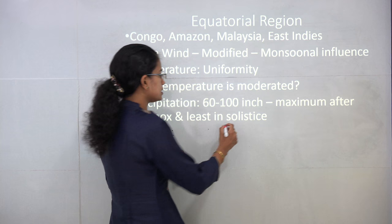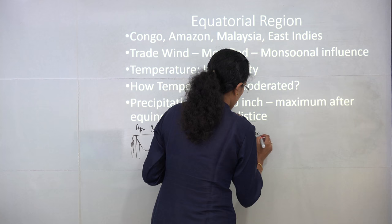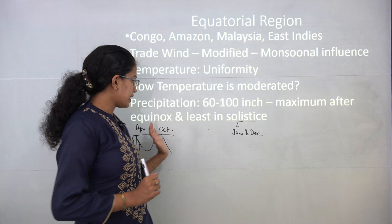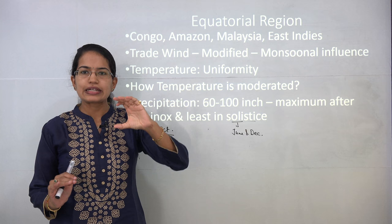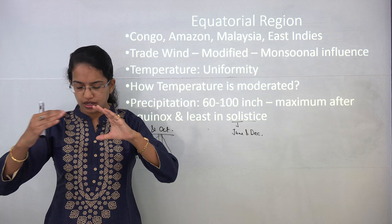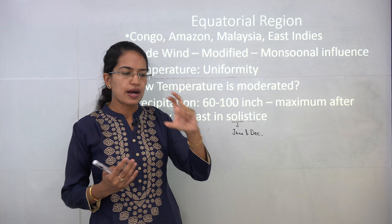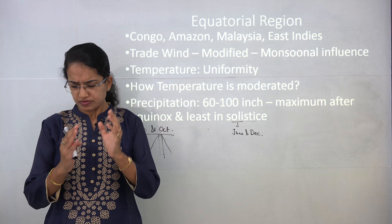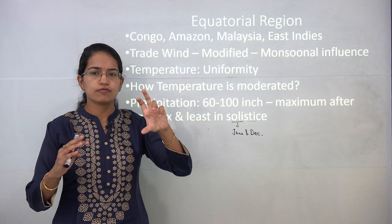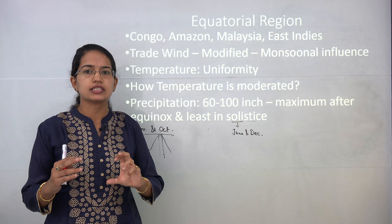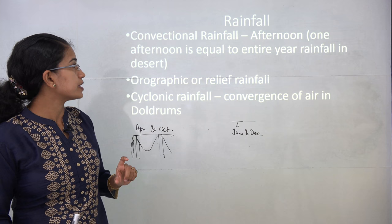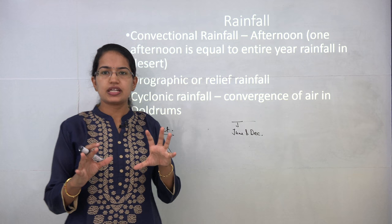Rainfall is lowest during the solstice months of June and December. As we move a little north and south from the equator, monsoonal influence comes into play. In the north hemisphere, June, July, and August are the months of rainfall for the monsoonal influence region, while in the south hemisphere December, January, and February are the rainfall months.